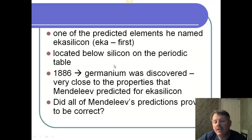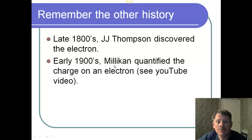Did all of Mendeleev's predictions prove to be correct? No. Not all. But most of them. And remember, part of his problem was he was working with atomic mass and not with atomic number. So, remember some of the other history.